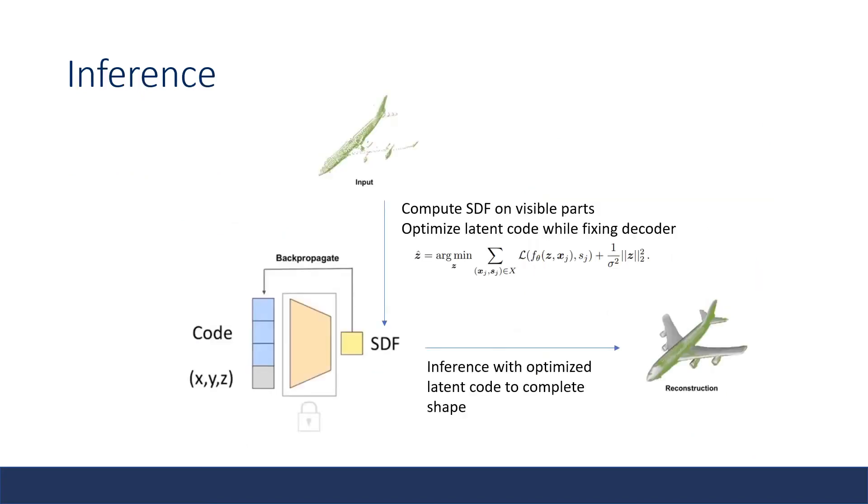At inference time, the optimal code that best explains the input shape can be obtained using gradient descent and minimizing the same objective function. Notice that during optimization, the trained decoder weights are kept frozen and only the code is optimized. The full reconstruction can be achieved by running inference with the optimized latent code in full 3D space.